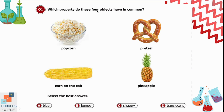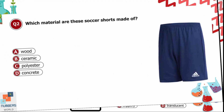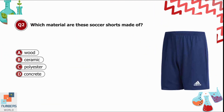Question 1: Which property do these four objects have in common? Option A is all of them are blue — that is incorrect. Option B is they are bumpy — yes. Option C is slippery — of course they are not slippery. The last option is translucent, meaning light can pass through them. Option B is the correct answer: the surface of all these objects is bumpy.